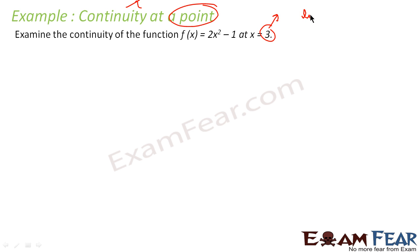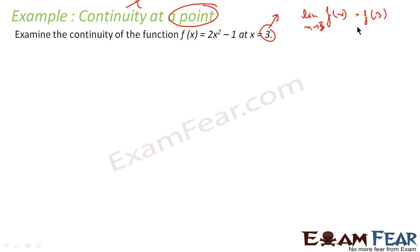Maybe a function is continuous at 10 points and not continuous at 5 points — there are examples of functions which are continuous at a particular point and discontinuous at another point. So here we have to find out whether this particular function is continuous at x is equal to 3 or not. We have to prove that the limit of f(x) as x tends to c, where c is 3, is equal to f(3). If this is true, the function is continuous at x equal to 3. To get the limit, we have to prove the limit exists.